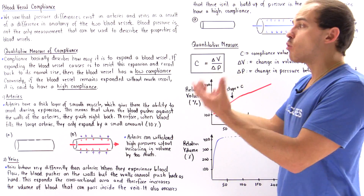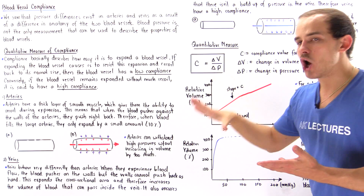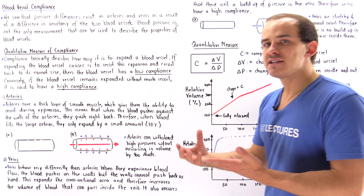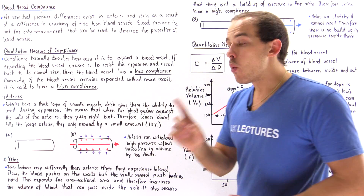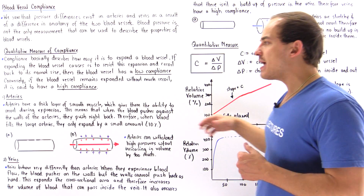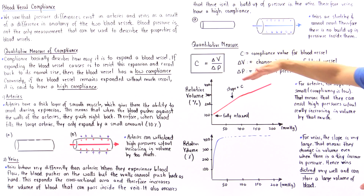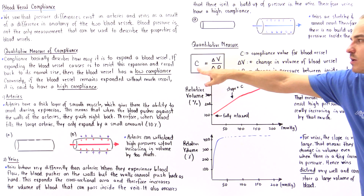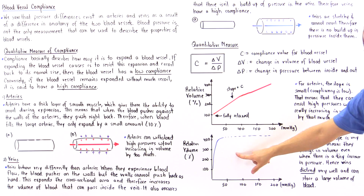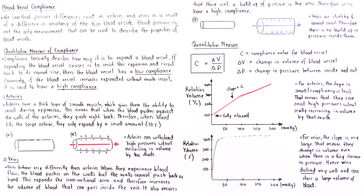That's exactly why in our body, veins are used to store a lot of the blood — veins store much more of the blood volume than do our arteries. Arteries have a low compliance: they can easily resist and recoil. Veins do not easily resist and recoil, meaning we can easily expand them, so they have a high compliance. For arteries the slope is low because compliance is low, but for veins the slope is much higher because the compliance is much higher.